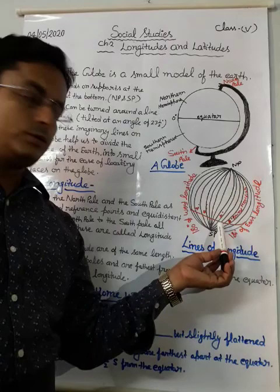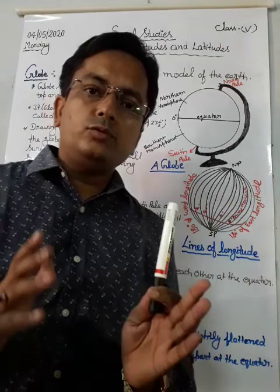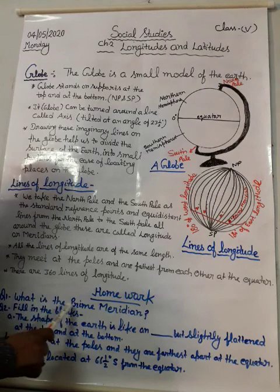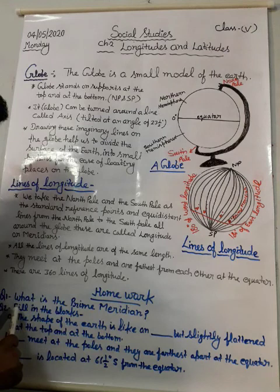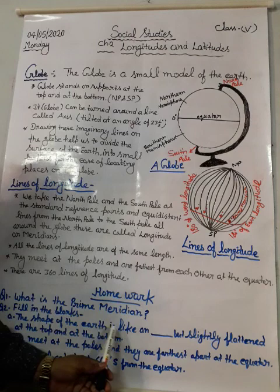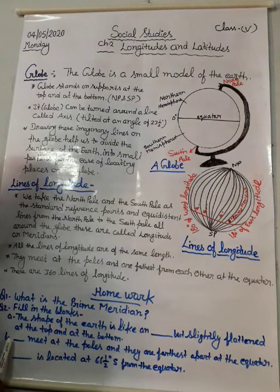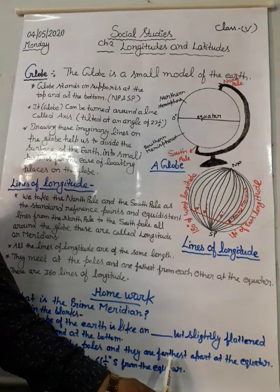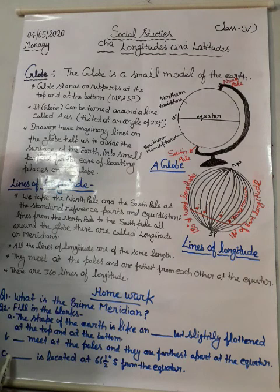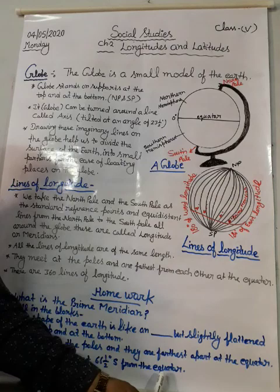So that's all about today's topic. Now the time for homework. First question: what is the prime meridian? Second: fill in the blanks — the shape of the earth is like a dash but slightly flattened at the top and at the bottom. Dash lines meet at the poles and are furthest apart at the equator. Dash is located at 66 and a half degrees south from the equator. Have a nice day.